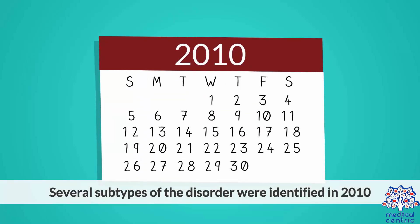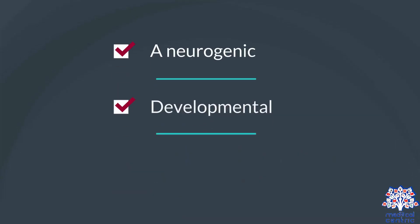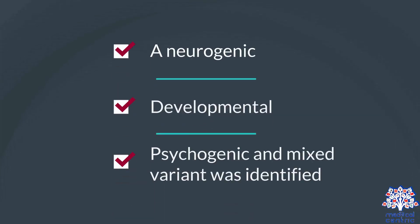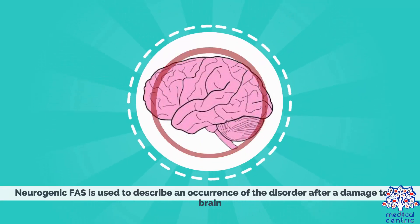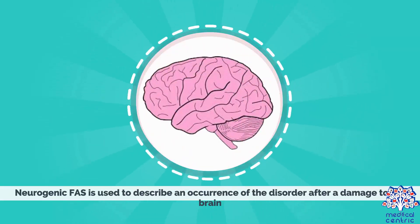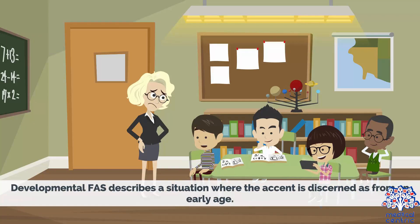Several subtypes of the disorder were identified in 2010: neurogenic, developmental, psychogenic, and a mixed variant. Neurogenic FAS describes an occurrence of the disorder after damage to the brain. Psychogenic describes FAS that is associated with a psychiatric disorder. Developmental FAS describes a situation where the accent is discerned from an early age.